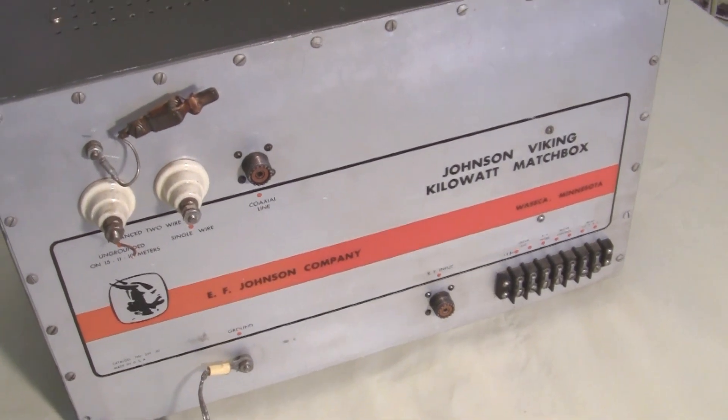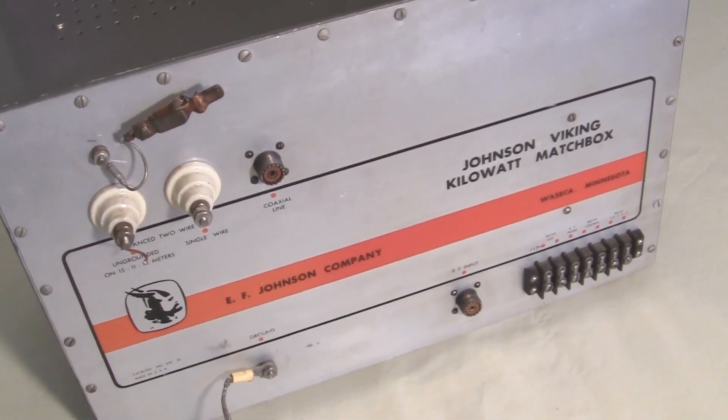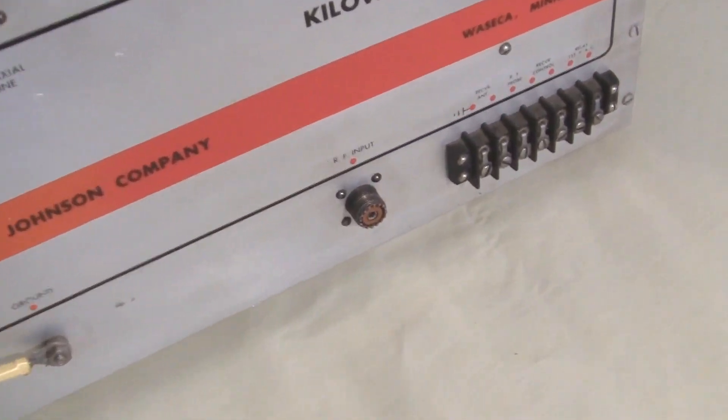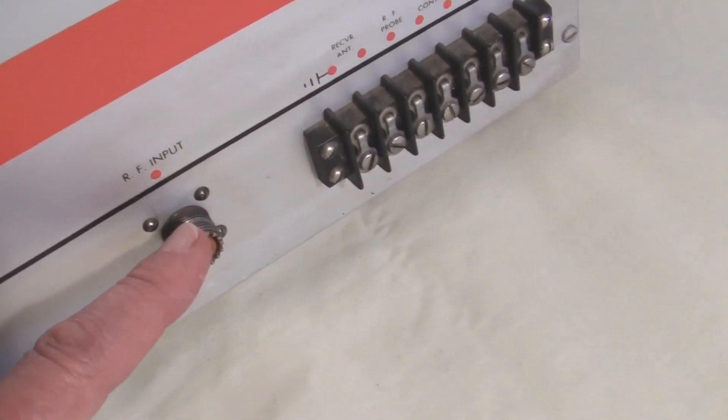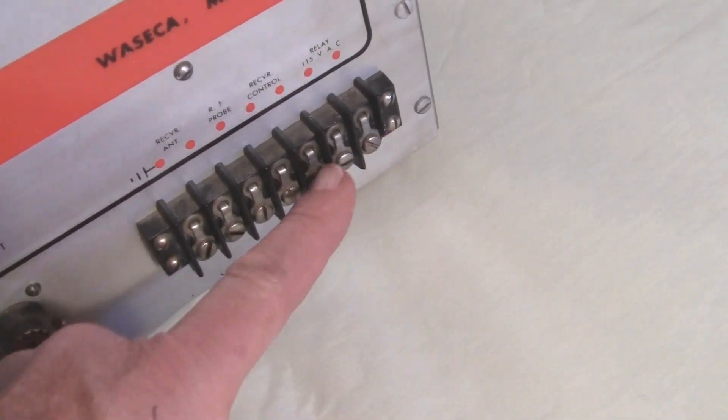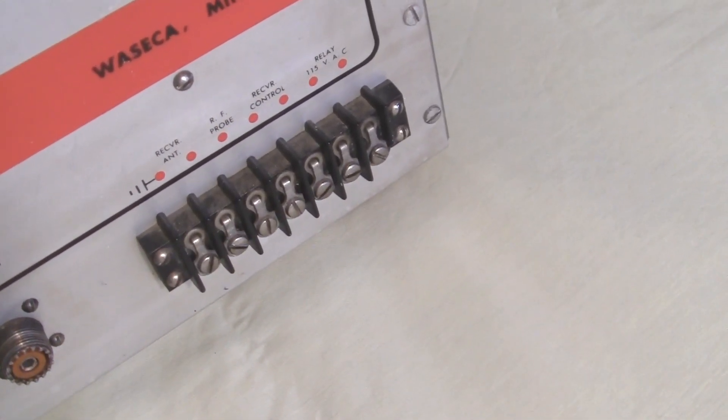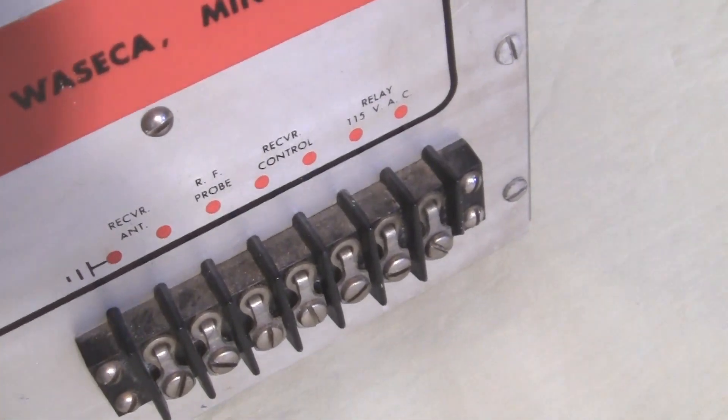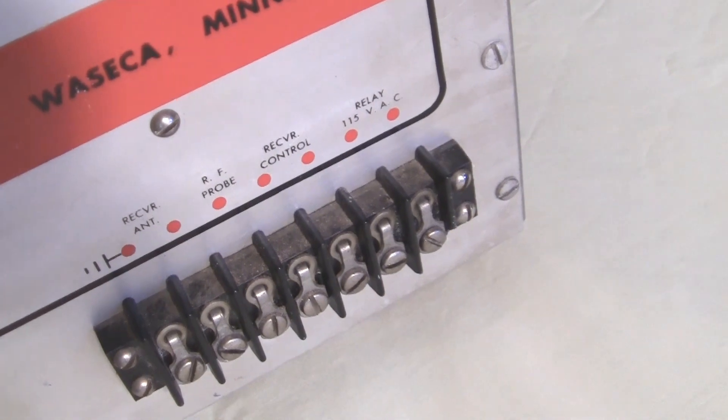Here we have the backside of the Johnson Kilowatt Matchbox. Starting down here with the coax, where the RF input, over here to the right is where we have the various controls. We're controlling the relay switching for the transmit to receive relay inside.